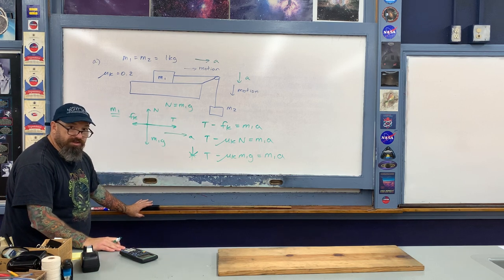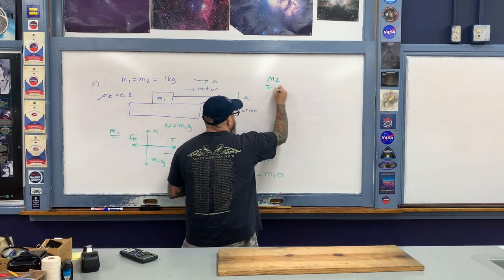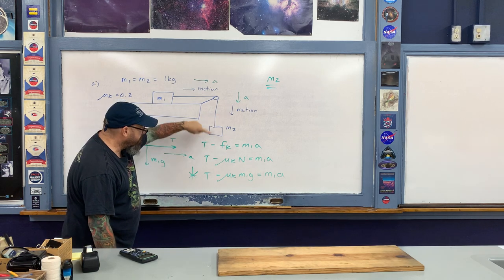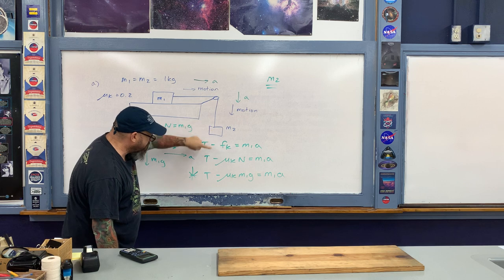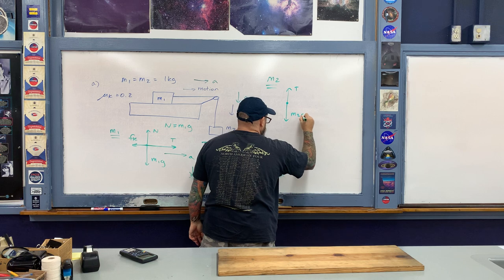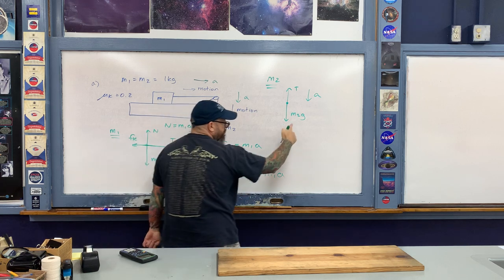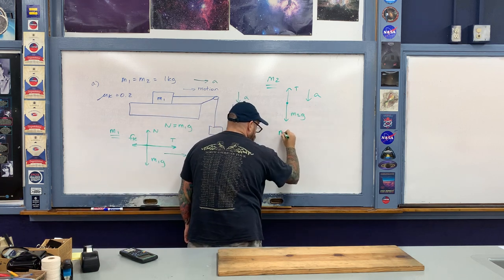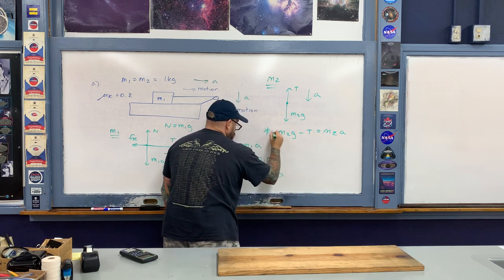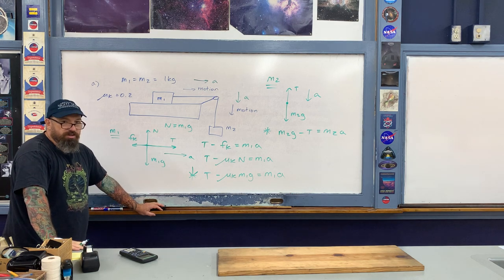This equation is the first of two equations and two unknowns — the tension and the acceleration A we're trying to find. For M2, there's no surface contact, so we just have tension upward and weight downward. Assuming acceleration is downward, adding forces gives M2G minus T equals M2A. That is the second of our two equations and two unknowns, and now we just do the algebra.